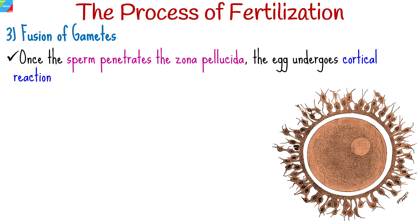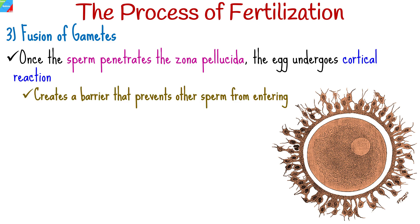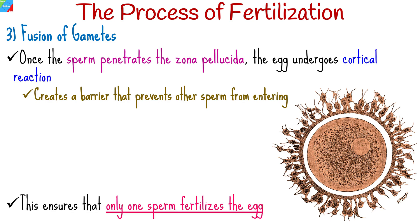Once the sperm penetrates the zona pellucida, the egg undergoes a process called the cortical reaction, where calcium ions are released, creating a barrier that prevents other sperm from entering. This ensures that only one sperm fertilizes the egg.